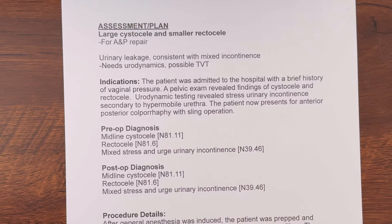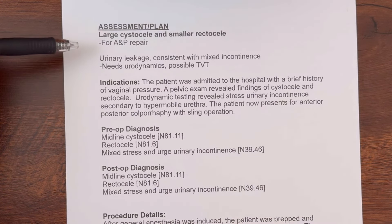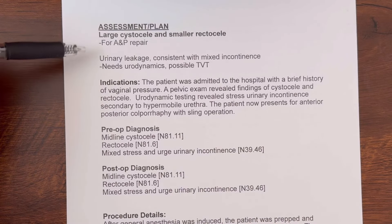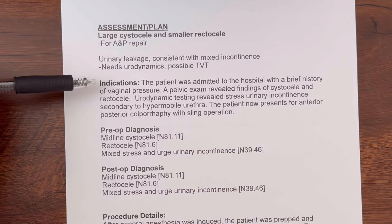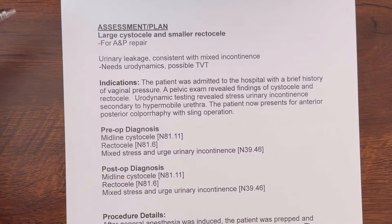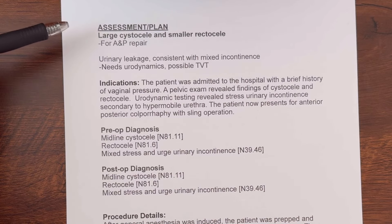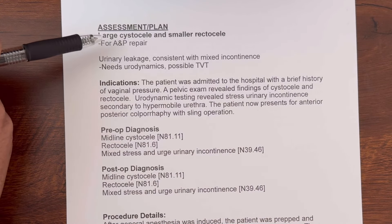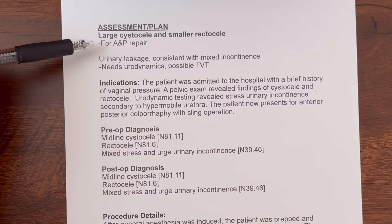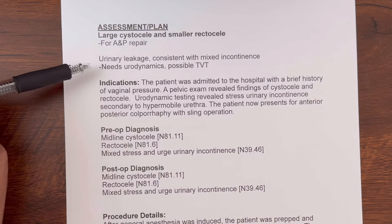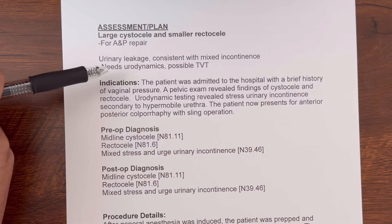So let's go ahead and jump right in. This section here — the assessment and plan of this operative note — is actually something that I copied from an office visit. So this is what the provider had documented in the office, and then indications and down is the actual operative note. The patient came in — I'm an OBGYN coder — and she has a large cystocele and a smaller rectocele. So the provider is recommending an A&P repair, which is an anterior and posterior repair. She's also having some urinary leakage consistent with mixed incontinence and needs urodynamics, possibly a TVT.